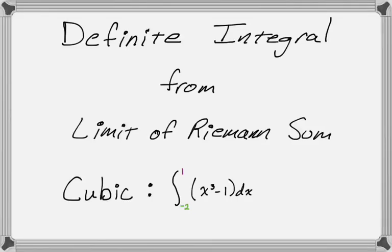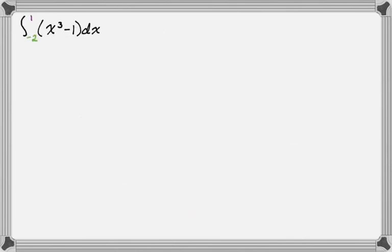In this video we are going to find a definite integral by taking the limit of a Riemann sum. In this one the integrand is going to be a cubic and that in my experience is pretty much the worst one that you'll do by hand. So let's get into it. We want to do the integral from negative 2 to 1 of x³ - 1 dx.